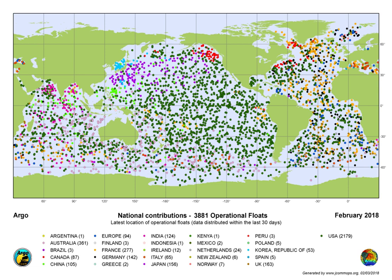The Argo program is a collaborative partnership of more than 30 nations from all continents that maintains a global array and provides a dataset anyone can use to explore the ocean environment. Argo is a component of the Global Ocean Observing System, and is coordinated by the Argo Steering Team, an international body of scientists and technical experts that meets once per year. The Argo Data Stream is managed by the Argo Data Management Team.